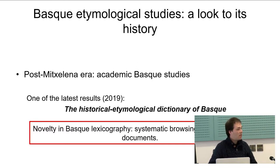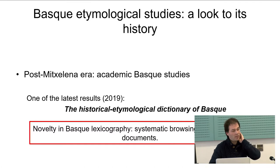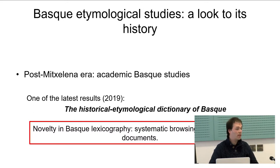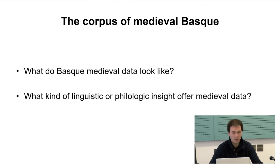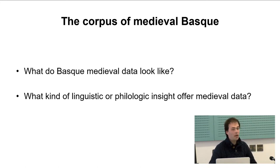In this dictionary, following Antoine Meillet's classical motto, reconstruction has to be based on both theoretical accuracy as well as solid philological grounding. We think this dictionary is a good example of the second part of his motto, since we have extensively and systematically browsed medieval documents, which is what we are going to talk about today.